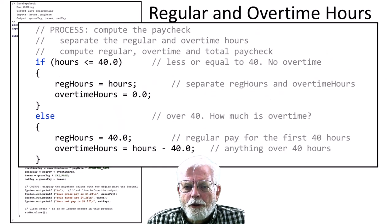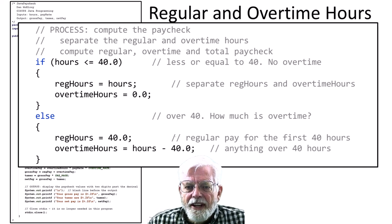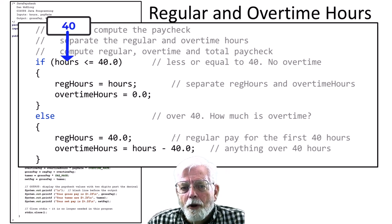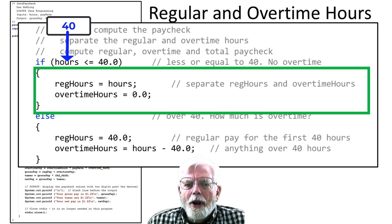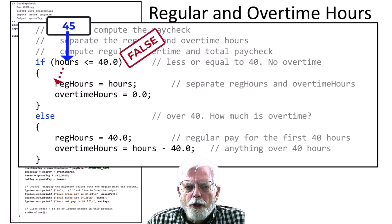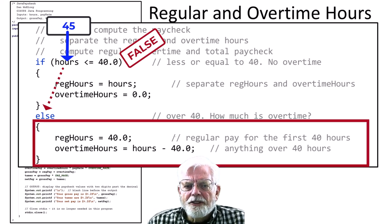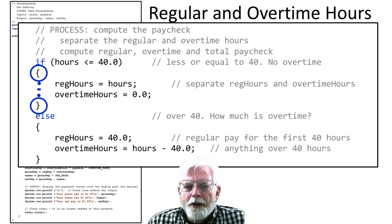The if-else statements are used to identify the number of regular hours worked and the number of overtime hours. The if-statement has a logical expression enclosed within parentheses that is tested to see if the hours are less than or equal to 40. The logical expression must evaluate to either a true or a false. When the expression evaluates to true, that means that there is no overtime and the block of code attached to the if-statement is executed. When the expression evaluates false, the block of code attached to the if-statement is skipped over and the code attached to the else-statement is executed. The curly braces, open curly brace, close curly brace, identify the begin and end of each block of code.